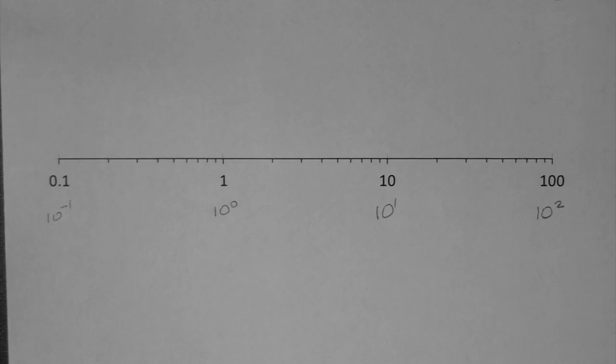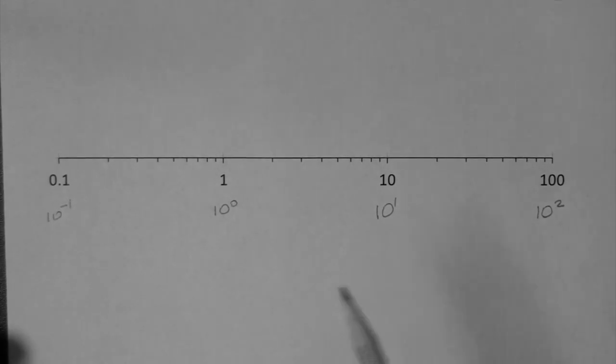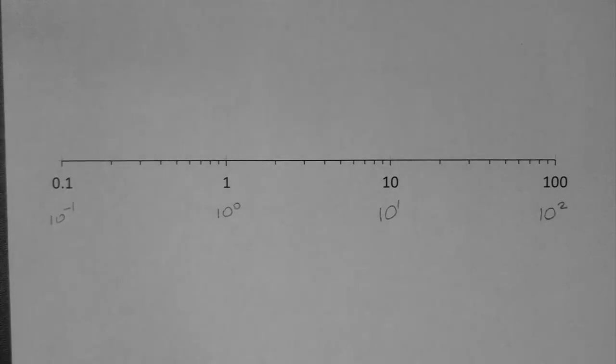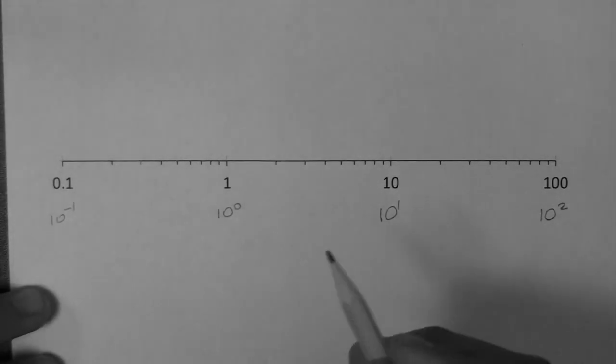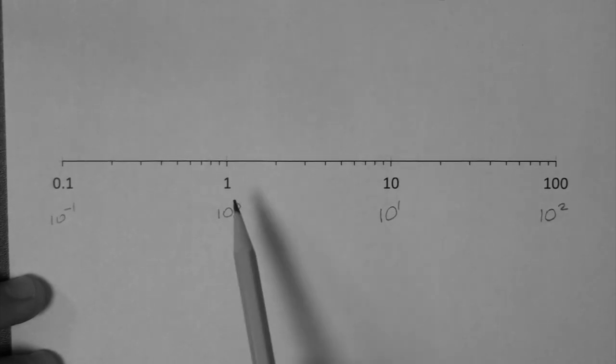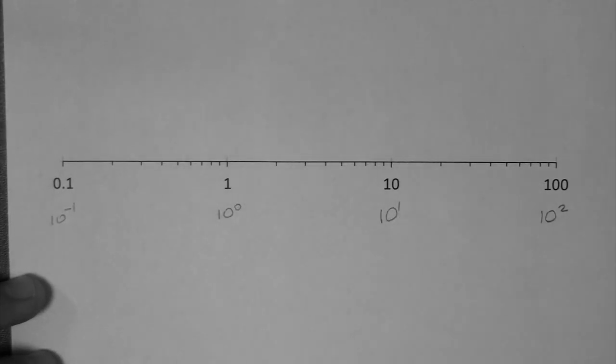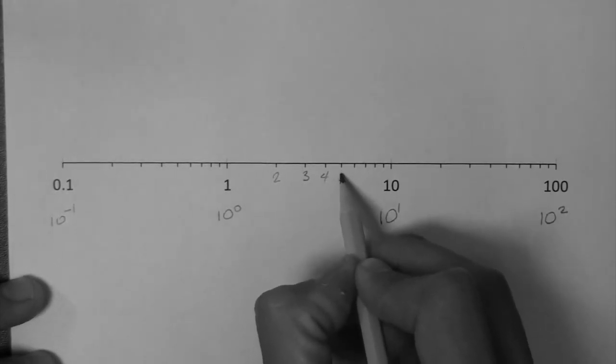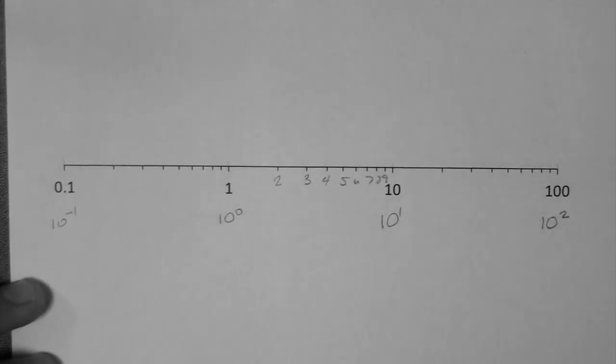So how do you read the log scale? You're going to read the tick marks. Let's pick this tick mark right here. Because this is a 1 and this is a 10, these tick marks are spaced by 1s. So this would be 2, this would be 3, this would be 4, 5, 6, 7, 8, 9.